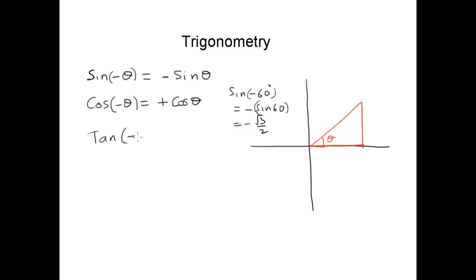Tan of minus theta would be minus tan theta. Now, you tell me about cosecant of minus theta. What about cosecant of minus theta? Right. It is just 1 over sine theta. So if sine theta is negative, this also should be negative. So it's minus cosecant theta.